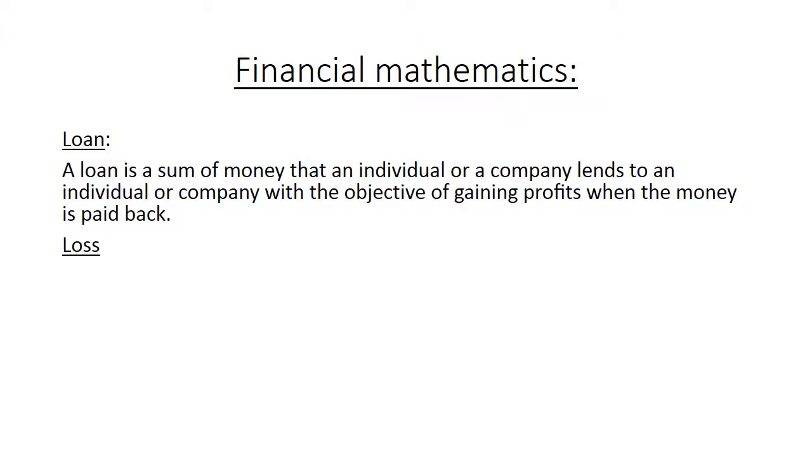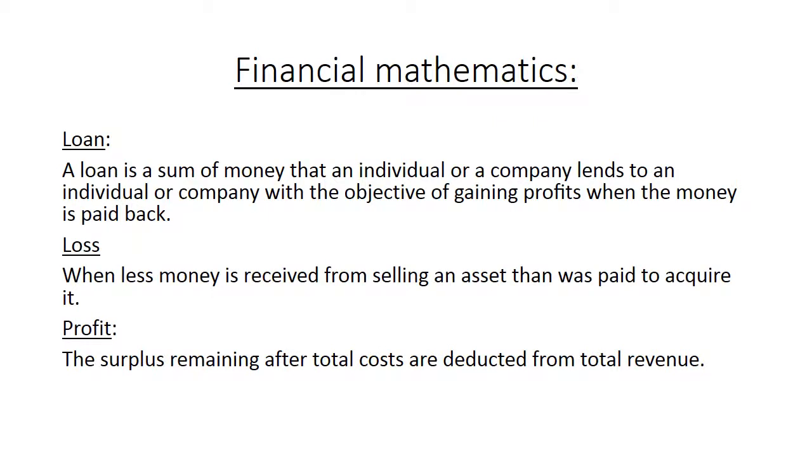A loss. When less money is received from selling an asset than was paid to acquire it. Profit. The surplus remaining of the total cost are deducted from the total revenue. Profit. The difference between a selling price and a cost price. The selling price is more now, that's why you have a profit.